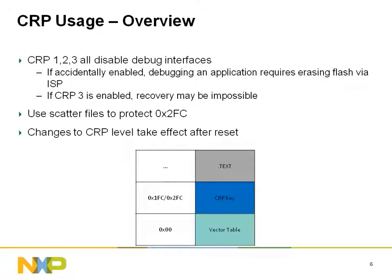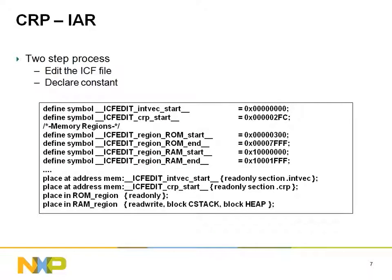This illustration shows how memory will be laid out in the following examples. For users of IAR Embedded Workbench, only a few modifications of the default ICF scatter file are required. Notice that the ROM section has been offset until after the CRP section. This will ensure that no code or constant data will accidentally be interpreted as a CRP control value.